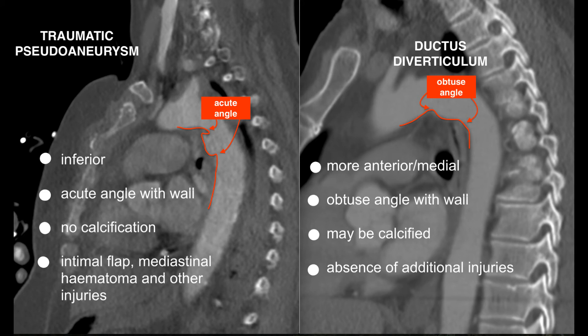So in summary, in a traumatic pseudoaneurysm, the bump or the aneurysm is situated more inferiorly than ductus diverticulum. It produces an acute angle with the wall and is usually not calcified — this is because an acute pseudoaneurysm will probably not be calcified unless the aorta itself is calcified. You may also see other features such as an intimal flap, mediastinal hematoma, and other injuries such as rib fractures, sternal fractures, and thoracic spine fractures.